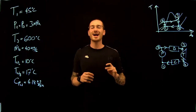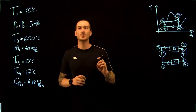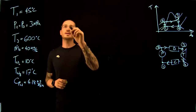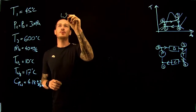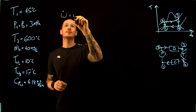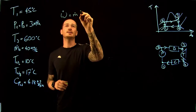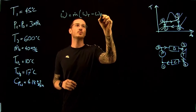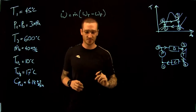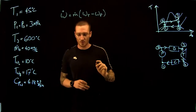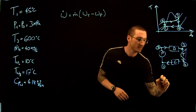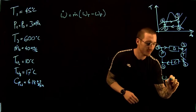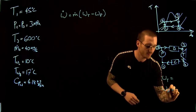Part A asks us to determine the power produced by this cycle. The power produced is equal to the mass flow rate times the specific work of the turbine minus the specific work of the pump. So we're going to need both the specific work of the turbine and the specific work of the pump.